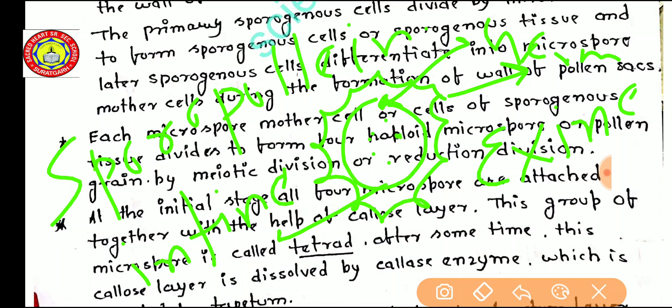In the next video, we will discuss megasporogenesis, and we will also study the diagrammatic representation of the tetrad — as various types of tetrads are present in angiosperms. Thank you for watching.